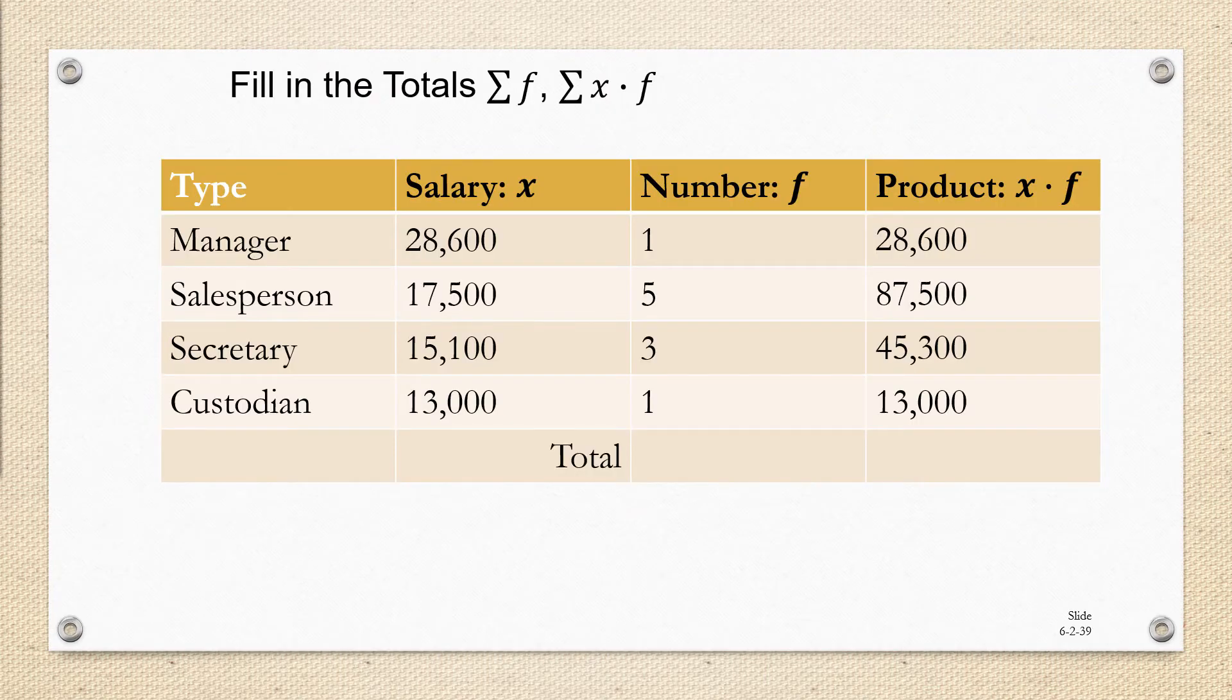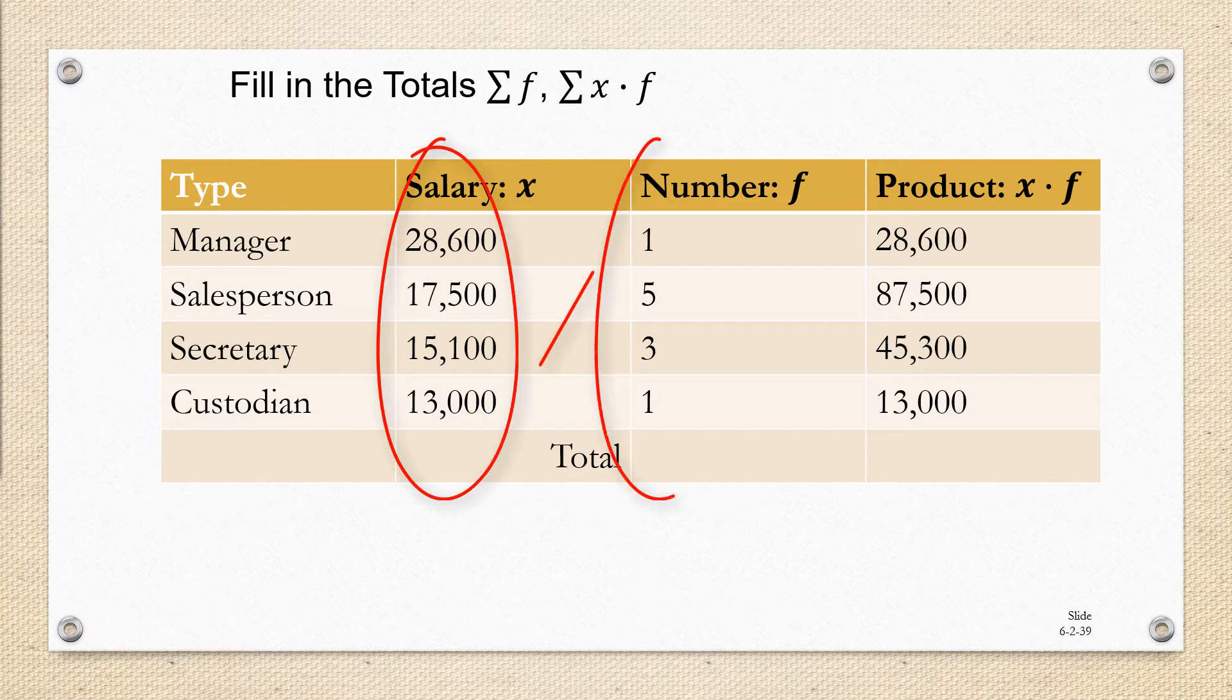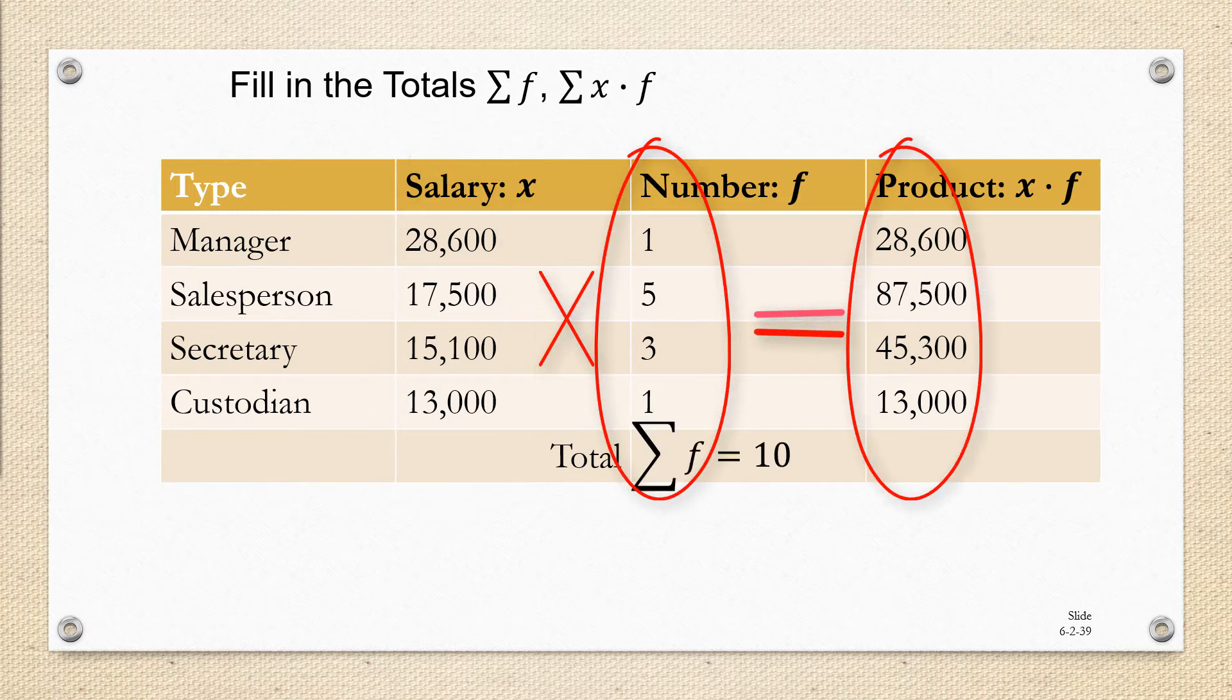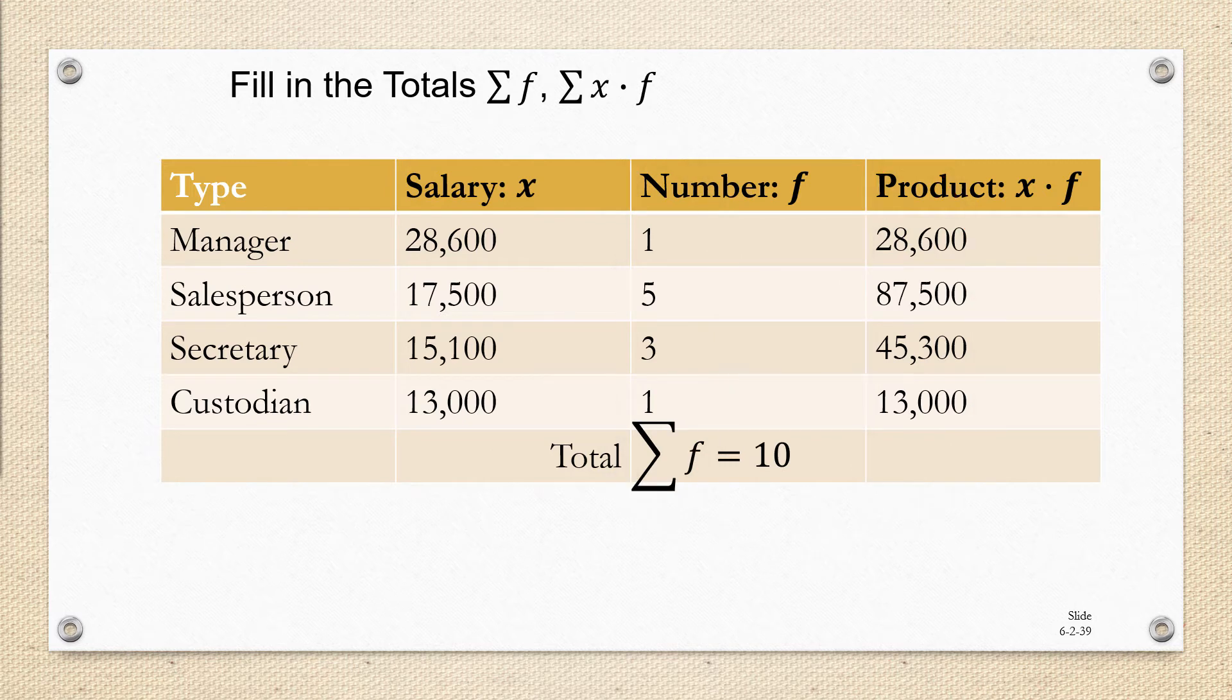In a previous video, we talked about how to find a weighted mean or the mean of a frequency distribution. We said take the X column multiplied by the F column to get a new product column. Then you're going to find the sum of the frequencies, which in this case is 10.